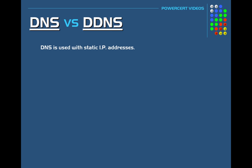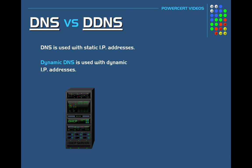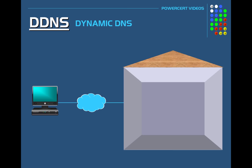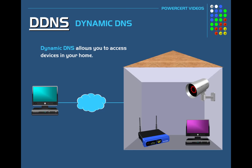DNS is used with static IP addresses, but Dynamic DNS is used with dynamic IP addresses. A dynamic IP address is where a device gets an IP from a DHCP server, and therefore the IP address changes periodically. Dynamic DNS is a service that allows you to access devices in your home — such as a computer, router, or security camera — from anywhere in the world, even if your IP address changes. Dynamic DNS is mainly used in homes because home internet services are given a dynamic IP and not a static IP.